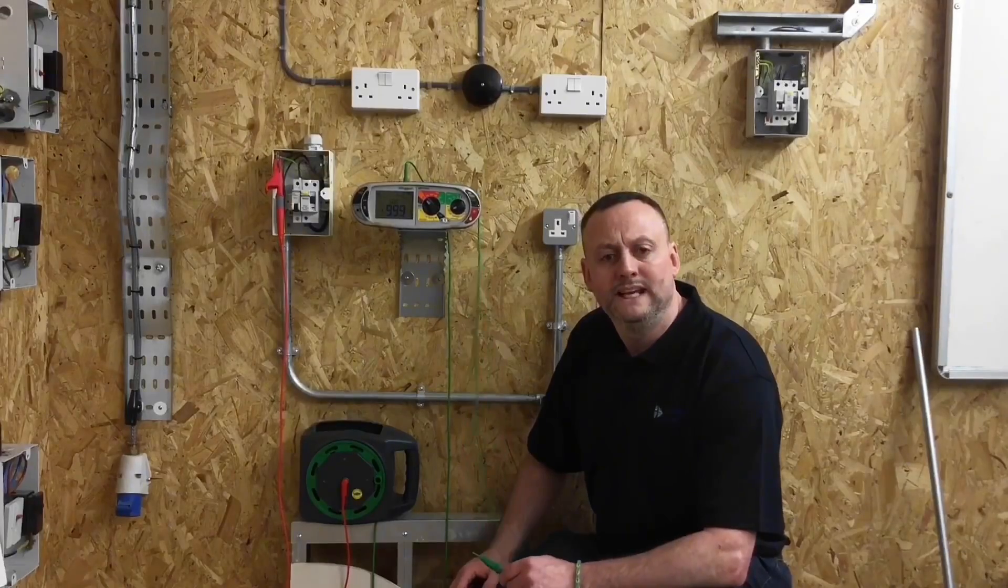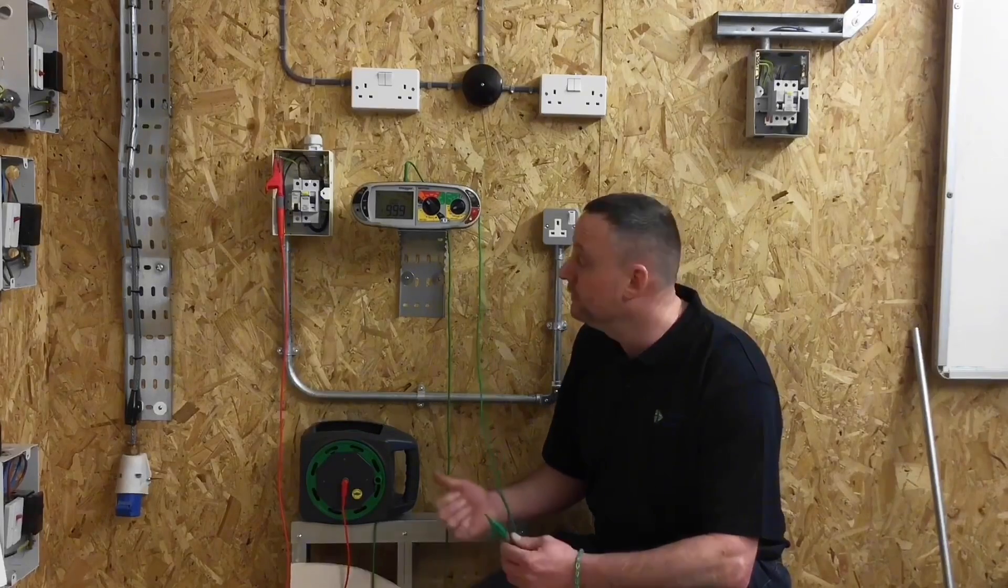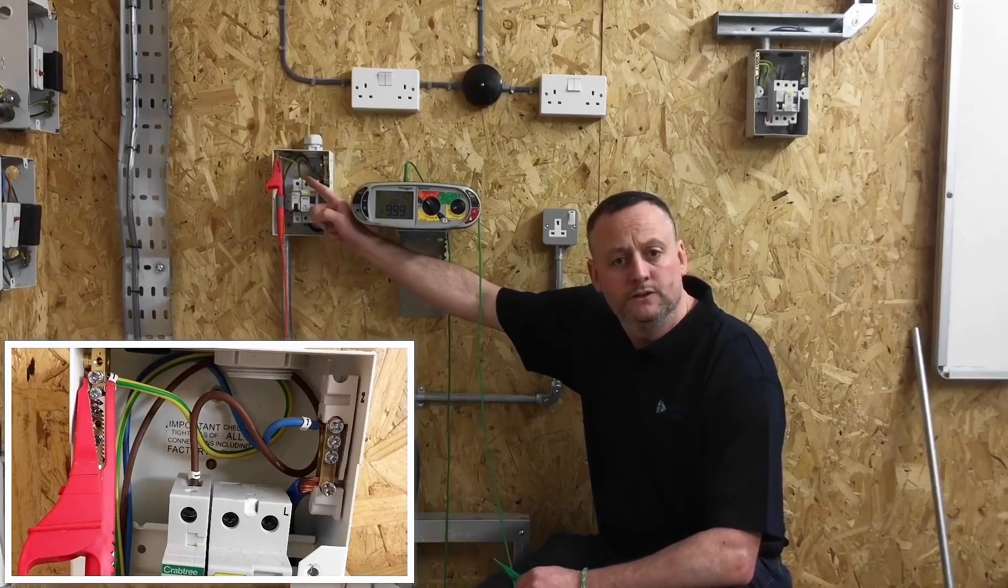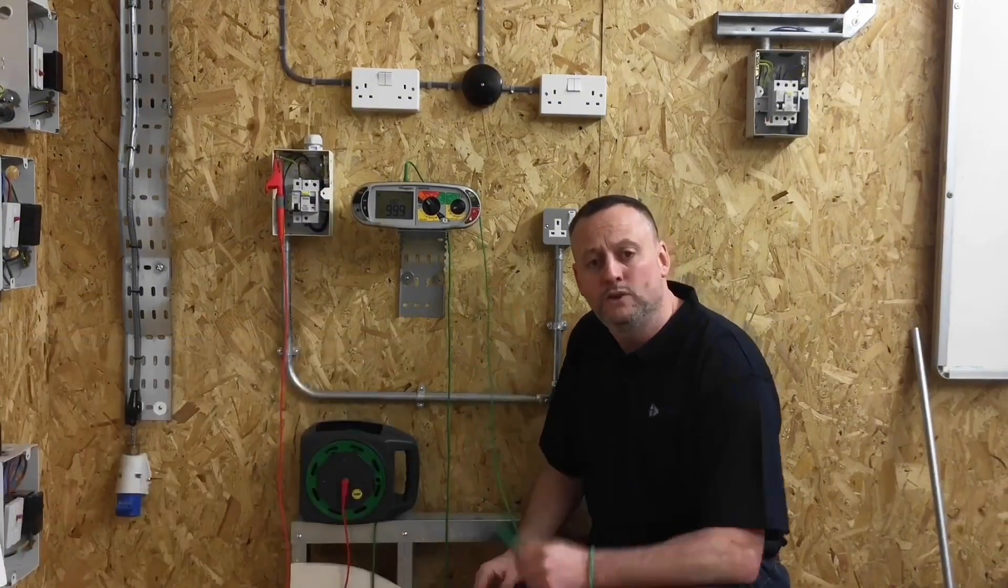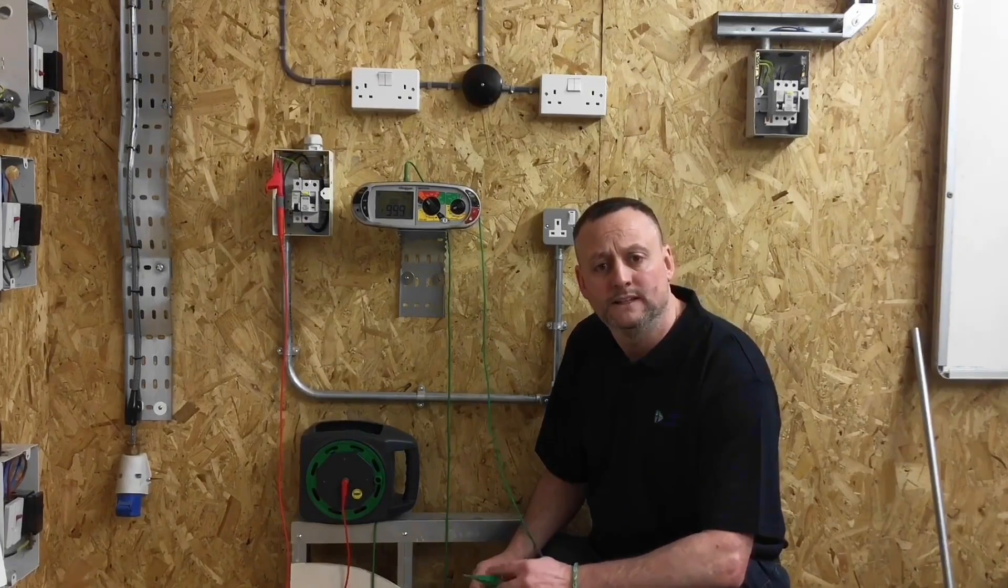I've set up my long wandering lead. I still get my learners to set up the long wandering lead, even though they could use the two very short leads in the tester, because the job is very small. I've connected one end of it to the earth bar. I've zeroed out the leads, and I've got the other probe, which I can go around and probe onto the exposed conductive parts to prove they're connected to earth.